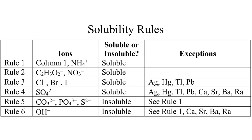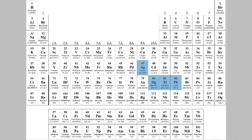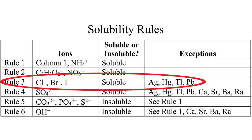Unfortunately, the rest of the solubility rules have exceptions. The third rule is that compounds that have an anion of chloride, bromide, or iodide are all soluble, except when the cation is silver, mercury, thallium, or lead. You'll learn why these are exceptions if you take an advanced inorganic chemistry course — it has to do with the radii of the ions — but for now you just need to remember these. So a compound containing chloride, bromide, or iodide and one of those four elements will form a precipitate.